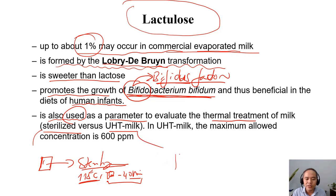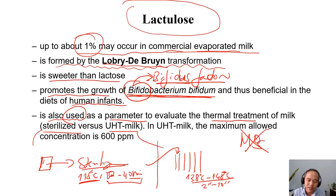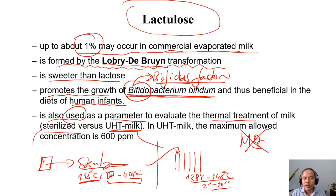For UHT, we do heat treatment of liquid milk before packaging — we pump the milk into a heat exchanger, for example. Then we can do it at 138 to 148 degrees C, much higher temperature, but for a much shorter time: 2 to 10 seconds. Both treatments achieve similar destruction of microorganisms — you destroy a similar level of bacterial spores. But UHT is better in terms of maintaining nutritional value. Because you heat for a shorter time, you damage fewer nutrients. So UHT heats for a shorter time, even at higher temperature, destroying a similar level of spores but preserving more nutrients.